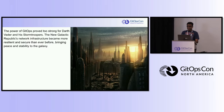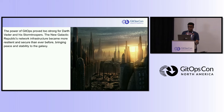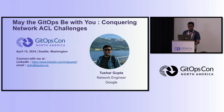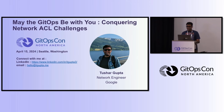To conclude, GitOps has the potential to revolutionize the way we manage and deploy network ACLs. By embracing the principles of version control, collaboration, and automation, we can ensure that infrastructure is always in the desired state, reducing the risk of failures and improving our ability to recover from incidents. That's all for today's session. I'd like to open the floor for questions, and my contact information is on the slide. Thank you.